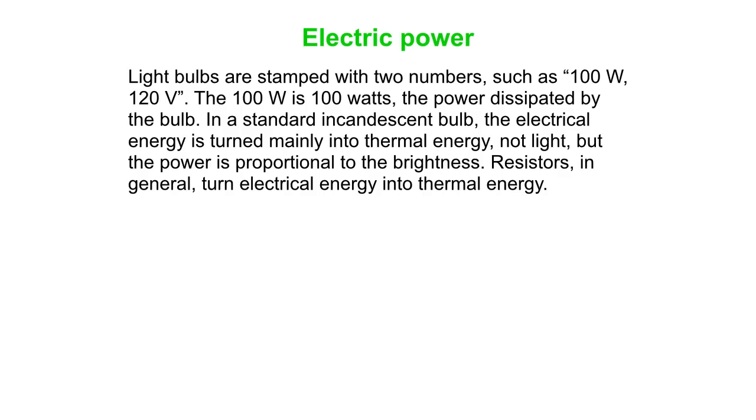Electric power. So if you pick up a light bulb, a standard incandescent light bulb, which are being outlawed these days, but anyway, it has two numbers on it: 100W and 120V. 120V is 120 volts, and the 100W stands for 100 watts - that's the power dissipated by the bulb. Or you might have a 75 watt bulb, 60 watt, 40 watt, whatever.